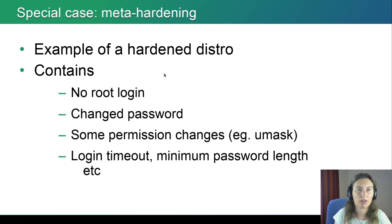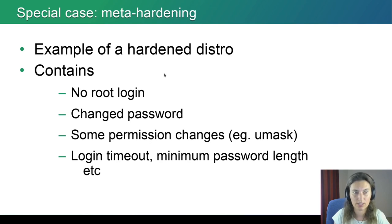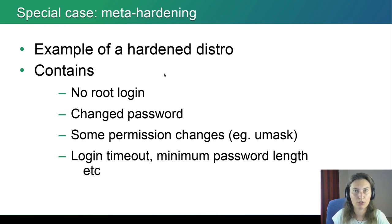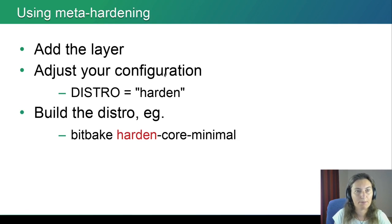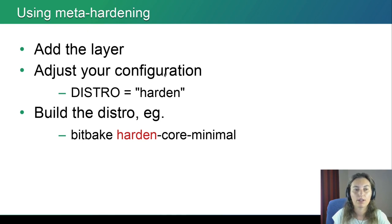There's a special case called meta-hardening. This is not a typical layer — it's an example of a hardened distribution. It contains disabling root login and gives an easy-to-understand way of doing it. It changes passwords, changes some permissions like the umask, and adds small features like login timeout and minimum password length, making it harder to get into your system.